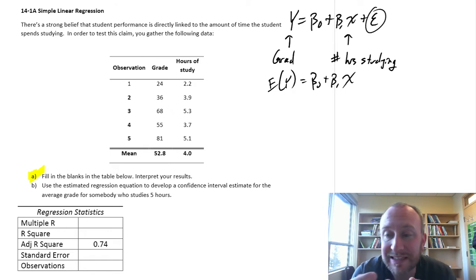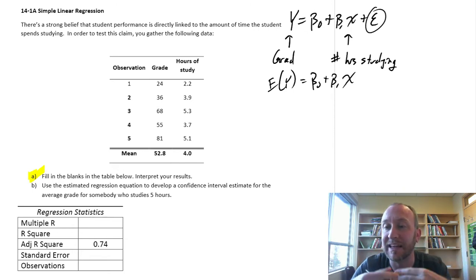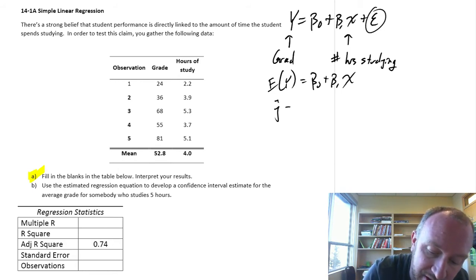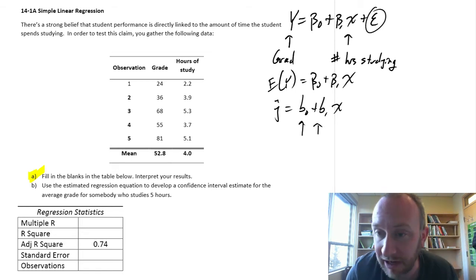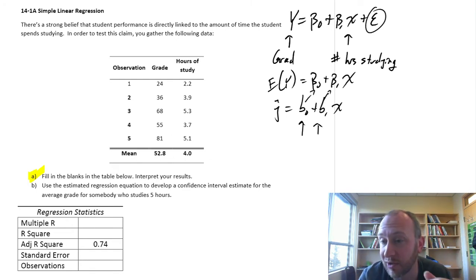So the average, the expected value of y, is a linear function of x. So now we can say if you study five hours a week, students who study five hours a week on average get a grade of 60%. Or somebody who studies ten hours a week on average gets a grade of 80%. So we can estimate the average values, not the exact values, because it's not going to be exactly the same. So this is what we're going to estimate. What we need to do is calculate our two sample parameters that we are then going to use as estimates of those population coefficients.